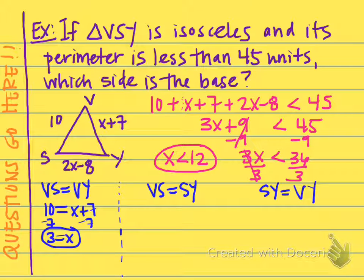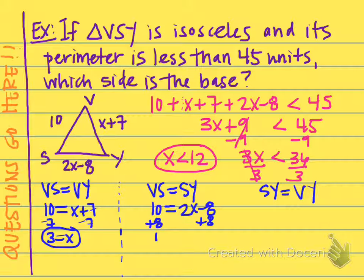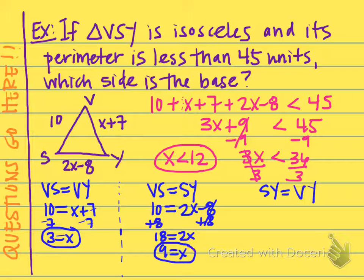Let's consider the second scenario: VS equals SY. VS is 10, and SY is 2x minus 8. If we solve this, we add 8 to both sides, giving us 18 equals 2x. Dividing both sides by 2, we get x equals 9. This also might be possible since 9 is less than 12, so we'll come back to this scenario in a minute.